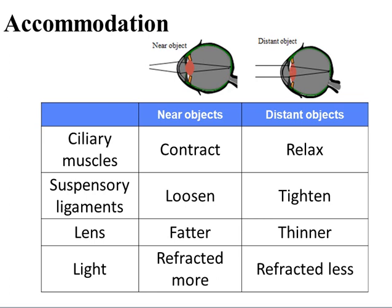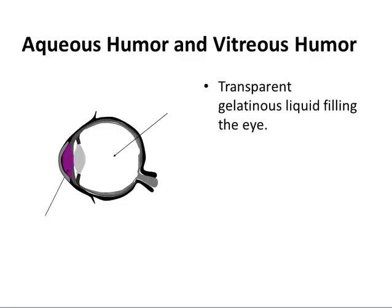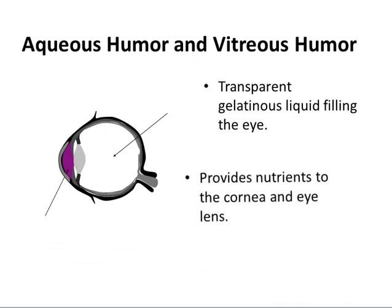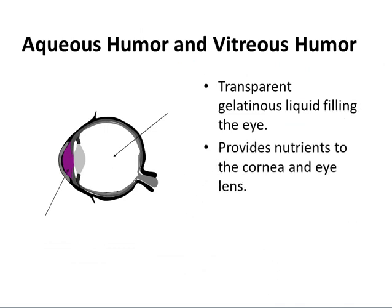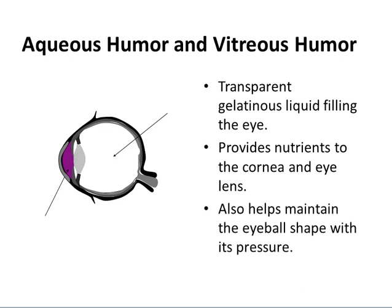Aqueous humor and vitreous humor are transparent gelatinous liquids filling the eye. They provide nutrients to the cornea and eye lens and also help to maintain the eyeball shape through their pressure.